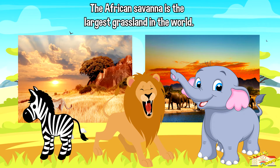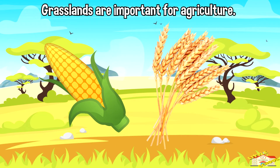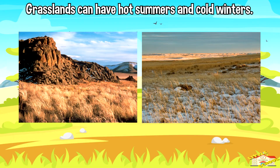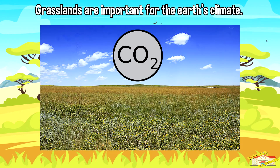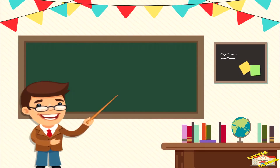Zebras and elephants also live there. Grasslands are important for agriculture, and many of the crops we eat, such as wheat and corn, come from grasslands. Grasslands can have hot summers and cold winters. Grasslands are also important for the earth's climate, as they help to absorb and store carbon dioxide from the atmosphere.